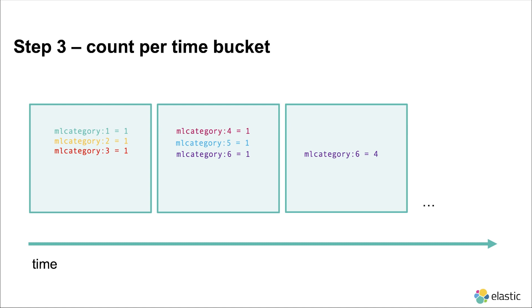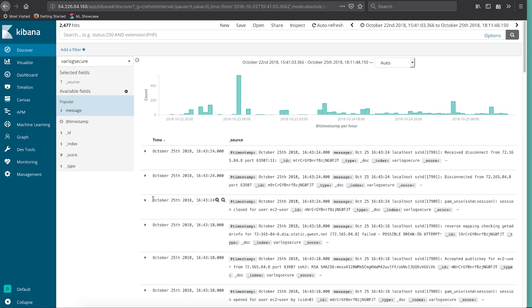In the third bucket perhaps we see four occurrences of category 6, and so on. We're just tracking the occurrence rate of these different categories over time. And of course we want to do anomaly detection if there is an unexpected spike of a certain type of category. Let's see a little bit of a demo.